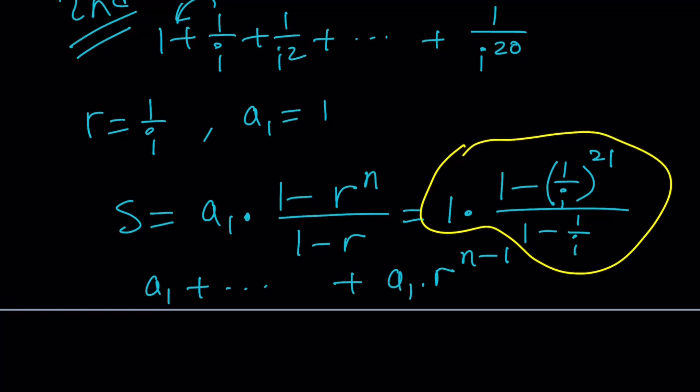First of all, what is 1 over i to the power 21? We can kind of think of it as 1 over i to the 20 times 1 over i. And 1 over i to the 20, as you know, is 1 because 1 over 1. And so it's going to be 1 minus 1 over i divided by 1 minus 1 over i. So this is 1 as well. So the sum is going to be 1 again, right? Make sense? Okay.